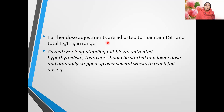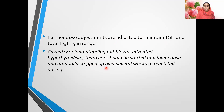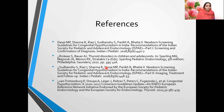Further dose adjustments should be made according to repeat TSH and T4, maintaining both in the target range. For long-standing, full-blown, untreated hypothyroidism, thyroxine should be started at a lower dose and gradually stepped up over several weeks to reach full dosing.